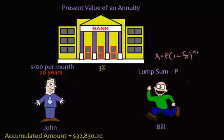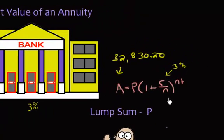Now what is A? A up here, that's going to be the $32,000 because that's what we want. That's what Bill wants. So $32,830.20. We know the interest rate. That was 3%.